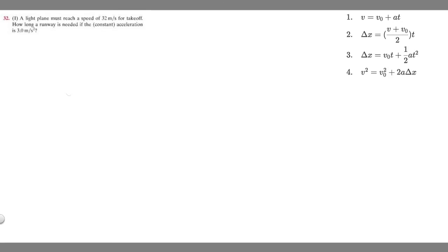In this problem we're told a light plane must reach a speed of 32 meters per second for takeoff. How long a runway is needed if the constant acceleration is 3 meters per second squared? Let's look at the problem and see what we're given.